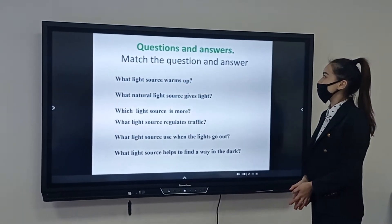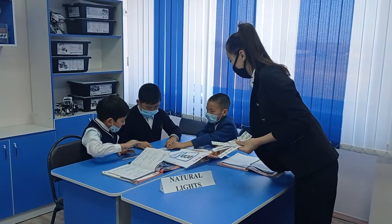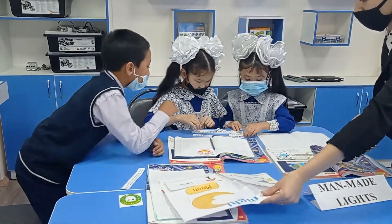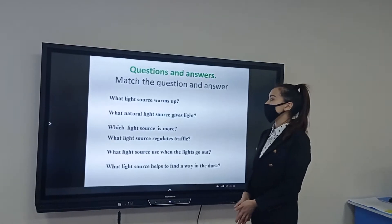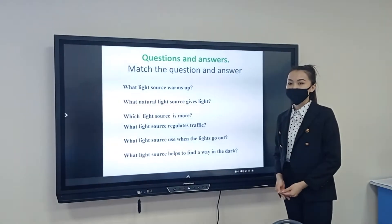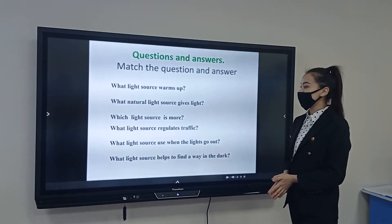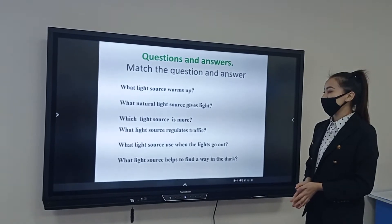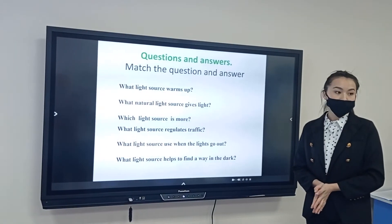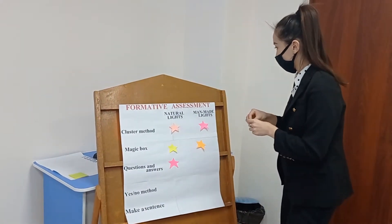Next task: questions and answers — match the question and answer. What light source warms us up? Sun. What natural light source gives light at night? Moon. Which light source controls traffic? Traffic light. What light source is used when the lights go out? Candle. What light source helps to find a way in the dark? Natural lights. Excellent. Man-made lights — very good.